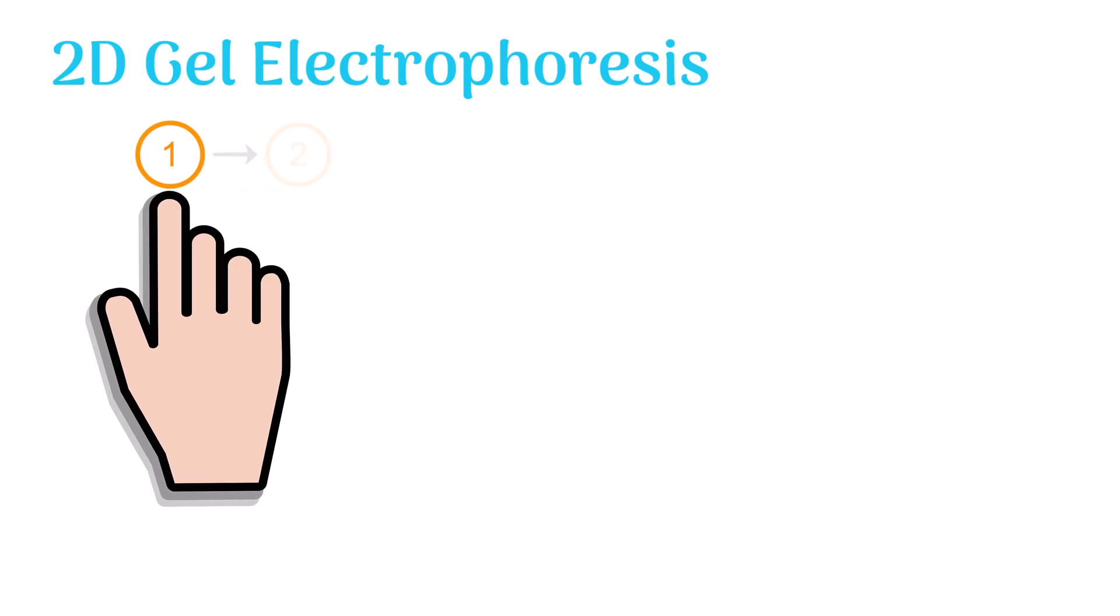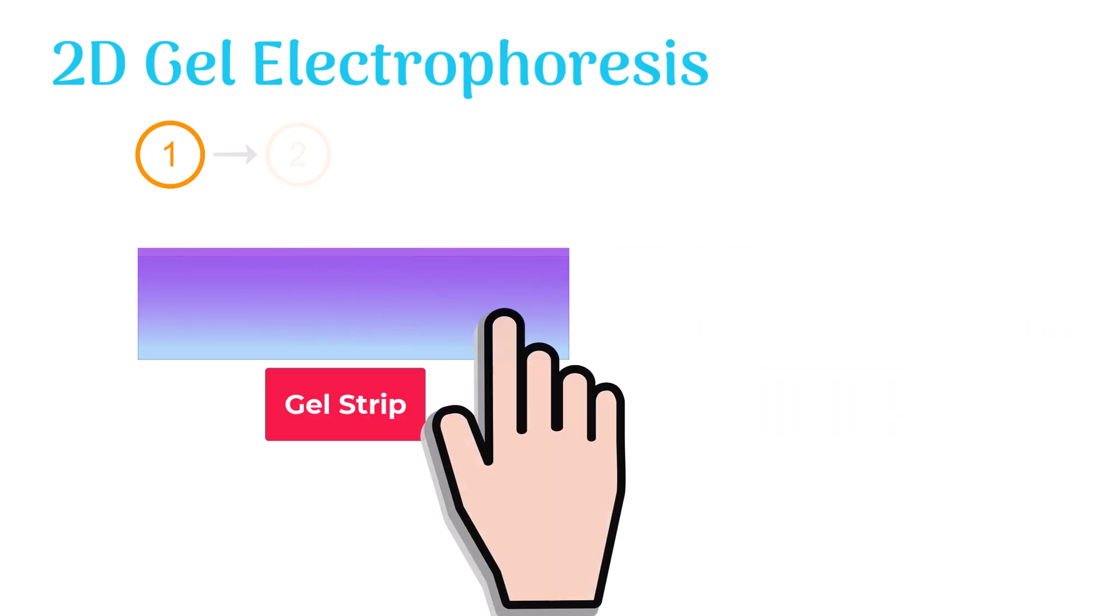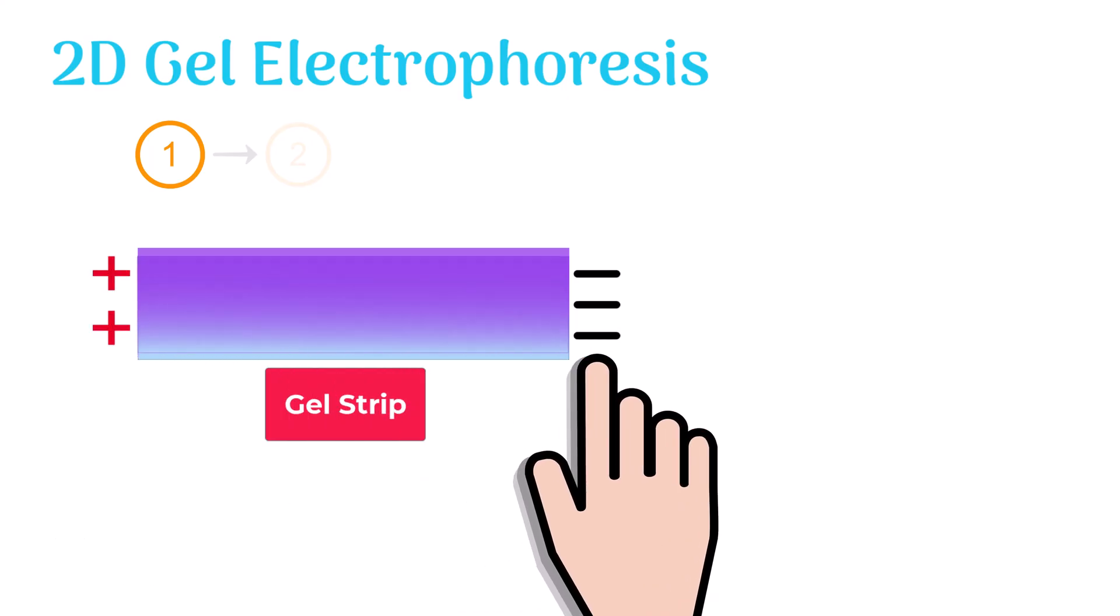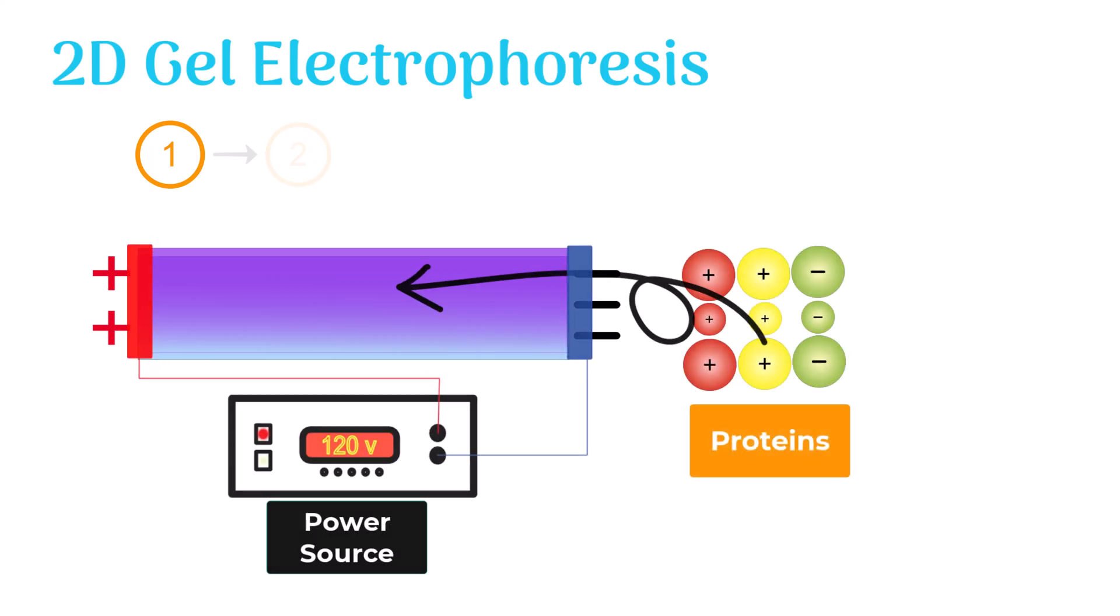In the first step, we take a strip of gel and place a pH gradient above it. One end of the gel becomes positive while the other end becomes negative.